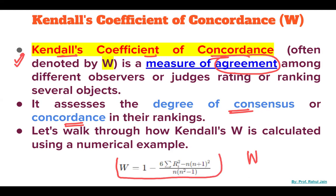A very simple formula is: W = 1 minus 6 into the summation of ri squared, where ri is the sum of rankings of all the objects, and n is the total number of objects.